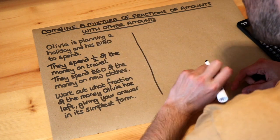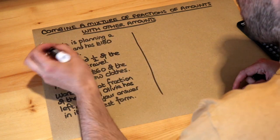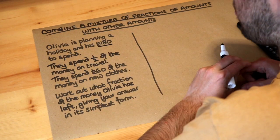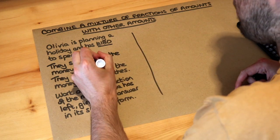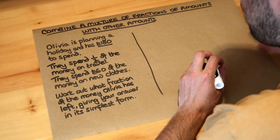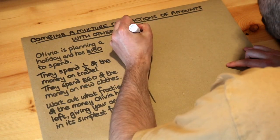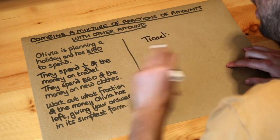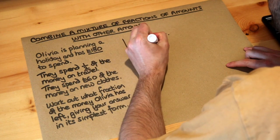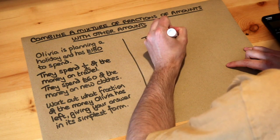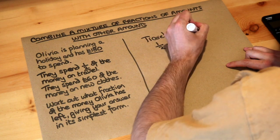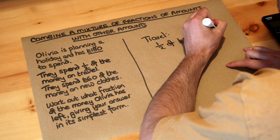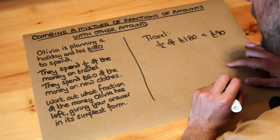We've got quite a lot of information here, but let's just use it bit by bit. We've got £180 to spend in total to start with, and then it says you spent half of the money on travel. So let's work out the amount spent on travel. Half of £180 — to find half of 180 we just divide by 2 — that's £90. So that's on travel.